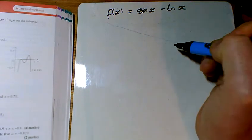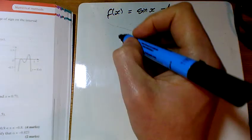Question 4. We've got sin x minus ln x. Again, we're in radians as we do this.